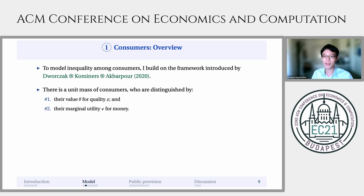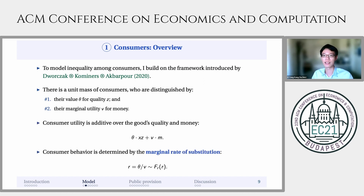There's a unit mass of consumers who are distinguished along two dimensions. First, the value for quality denoted by theta. And second, the marginal utility for money denoted by V. Consumer utility is additive over the good's quality and money, and this implies that consumer behavior is entirely determined by each consumer's marginal rate of substitution denoted by R — the ratio between theta and V — which we assume is distributed according to some well-behaved distribution F of R.